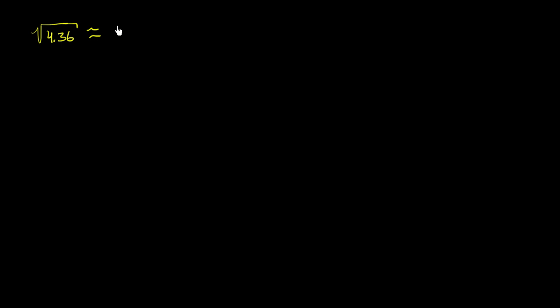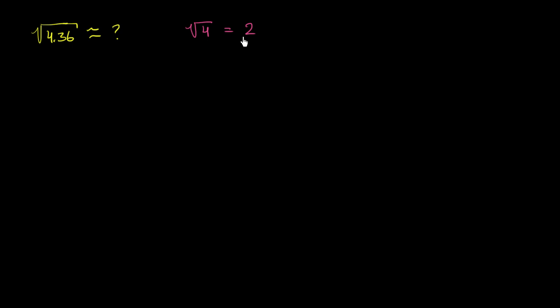Let's say that we're interested in approximating what the square root of 4.36 is equal to. We want to figure out an approximation of this, and we don't have a calculator at hand. One way to think about it is we know what the square root of 4 is — it's positive 2. But let's say we want to get a little bit more accurate. What I want to show you in this video is a method for approximating the value of a function near a value where we already know the value.